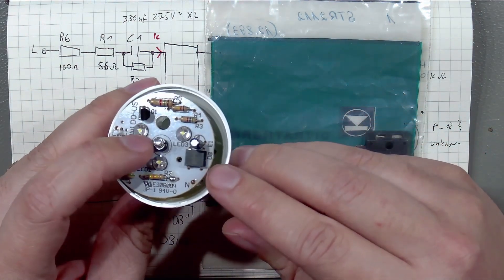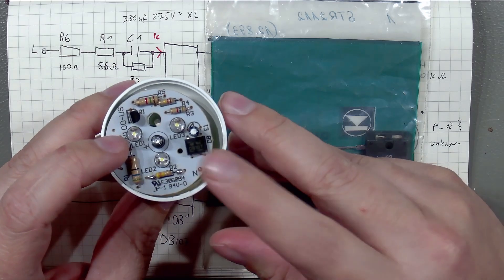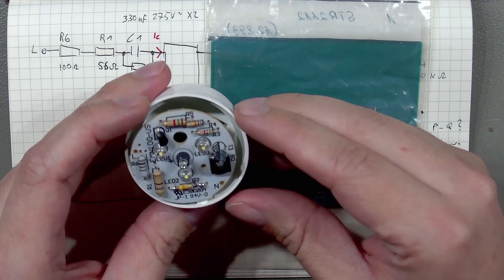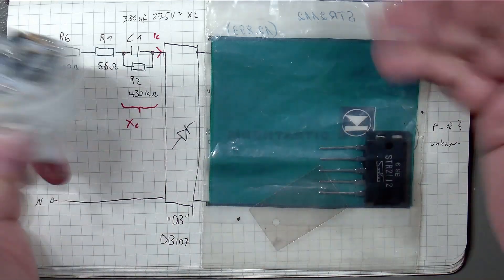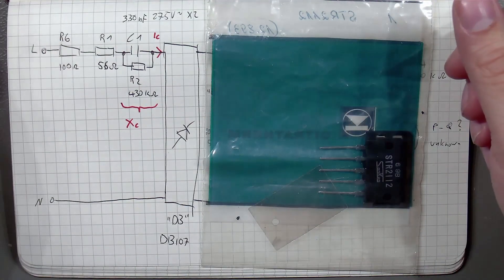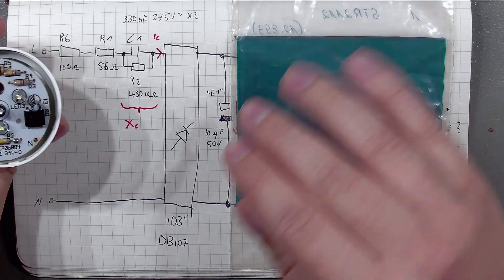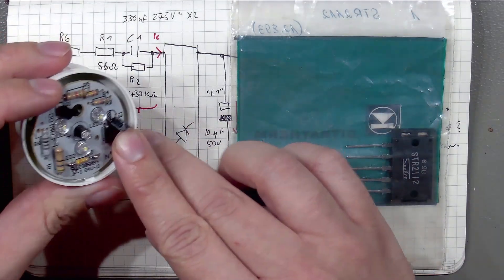We follow up by the diode bridge, conventionally named DB. It is a type DB107, just standard part, nothing fancy.